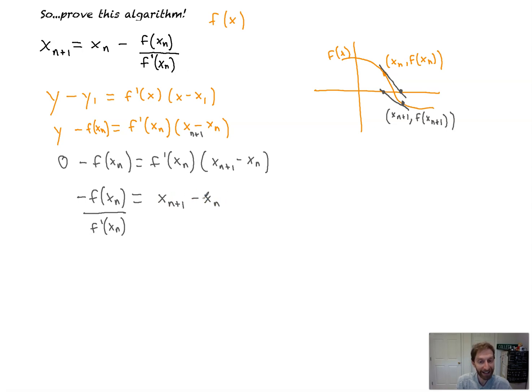That's x sub n plus 1 minus x sub n. Okay, okay. Next, we just have to add x sub n to both sides. And we have the formula, which approximates for us when we have a 0 on our tangent line.